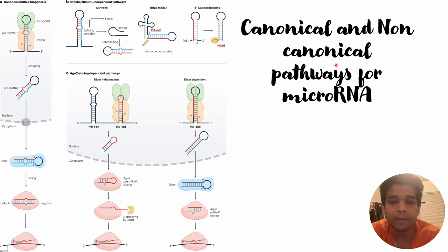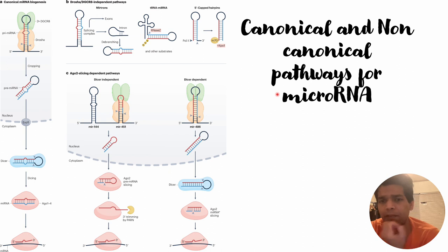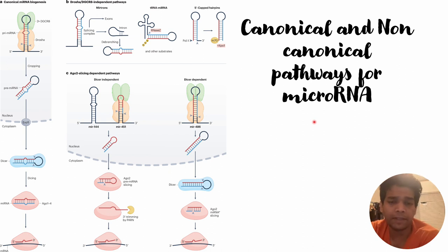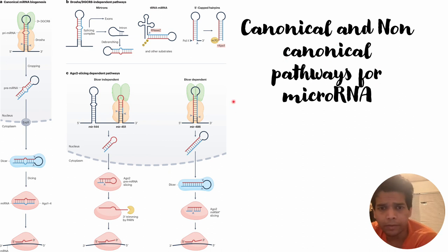In this video we will discuss how micro RNAs are formed within the cells and silence specific genes. There are two different pathways that have been discovered: the canonical pathway and the non-canonical pathway.